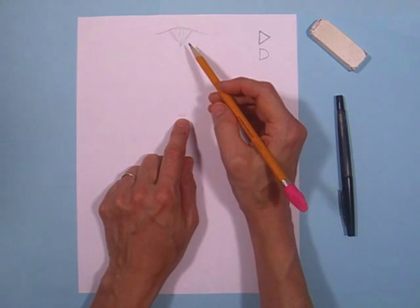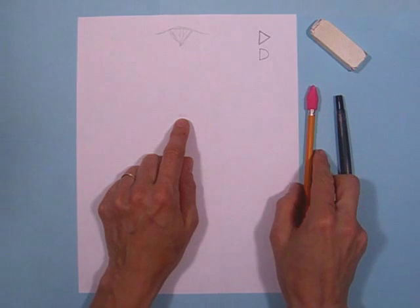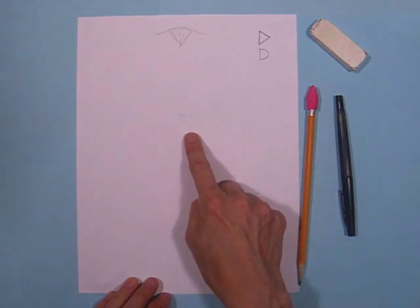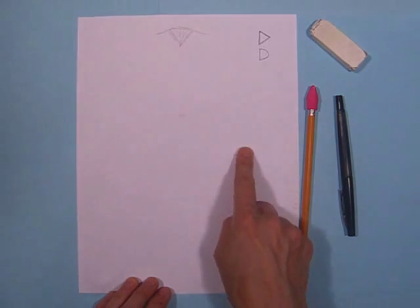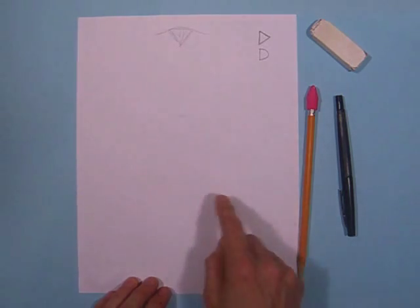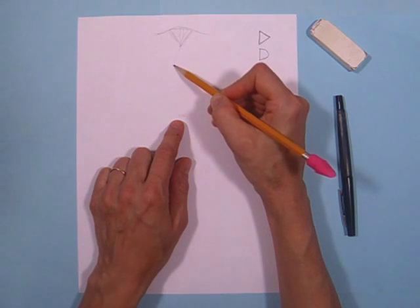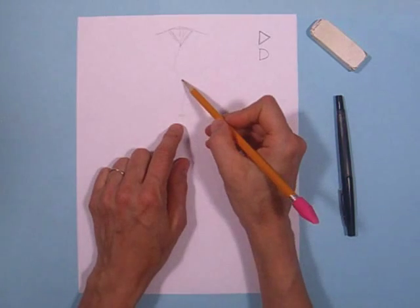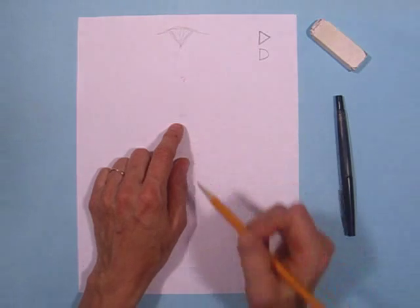We're going to make what I call a shallow S or a very slight S. A shallow S goes like this. It hardly waves at all. A curvy S goes like this. We're going to make a very shallow S from here to here. Like that. And on the second little hump we're going to put a little bump right there.